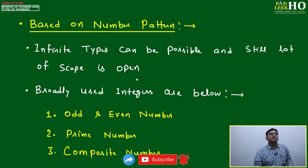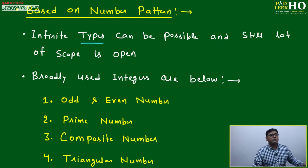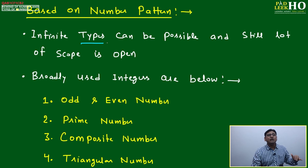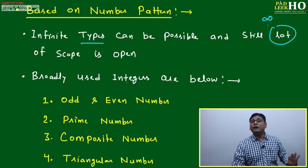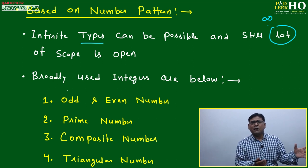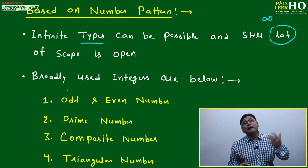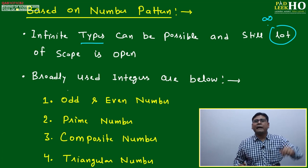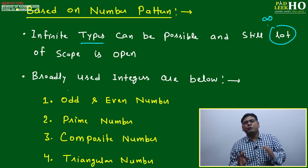Next, based on number patterns or categories in a series — at the beginning of this session I mentioned that infinite types of numbers are possible and infinite scope is open. You can invent anything based on numbers. Many mathematicians spend five to ten years studying just one type — prime numbers — where eating, sleeping, and walking all revolve around primes.